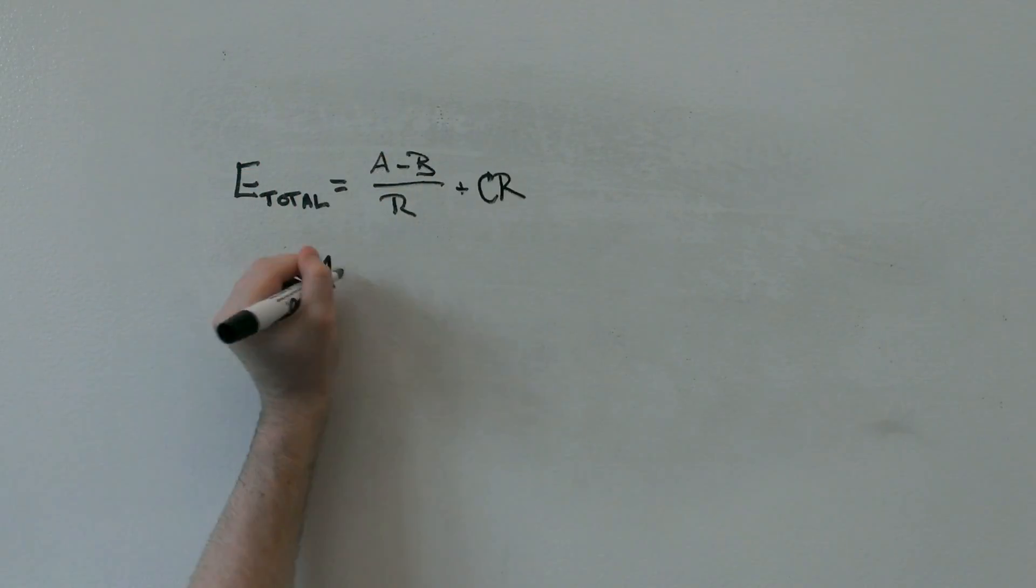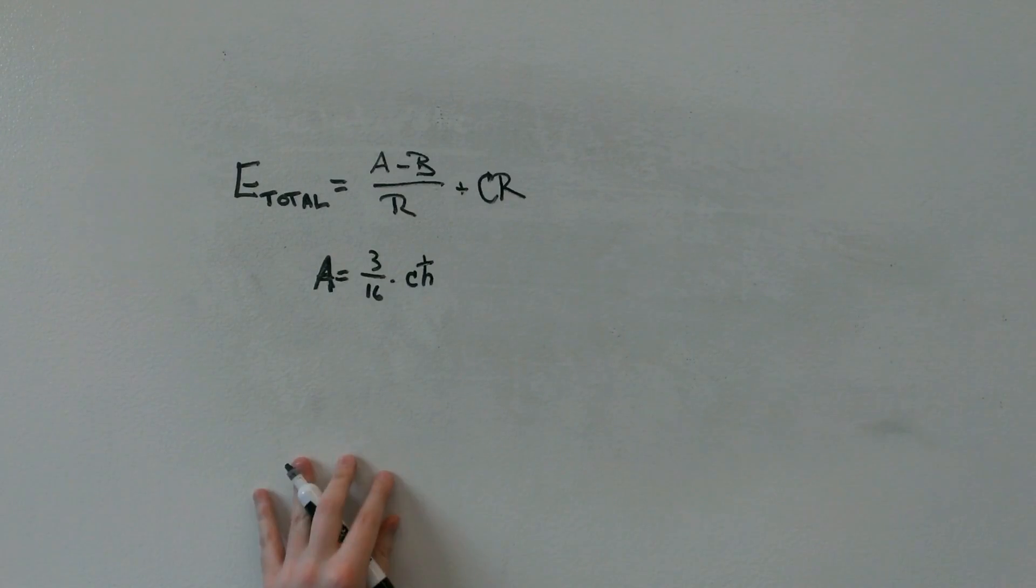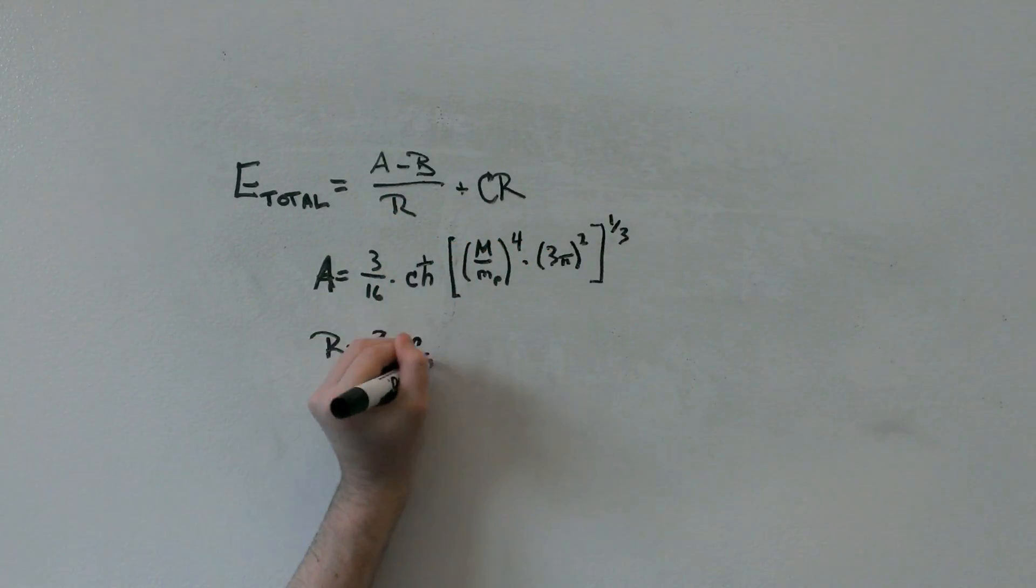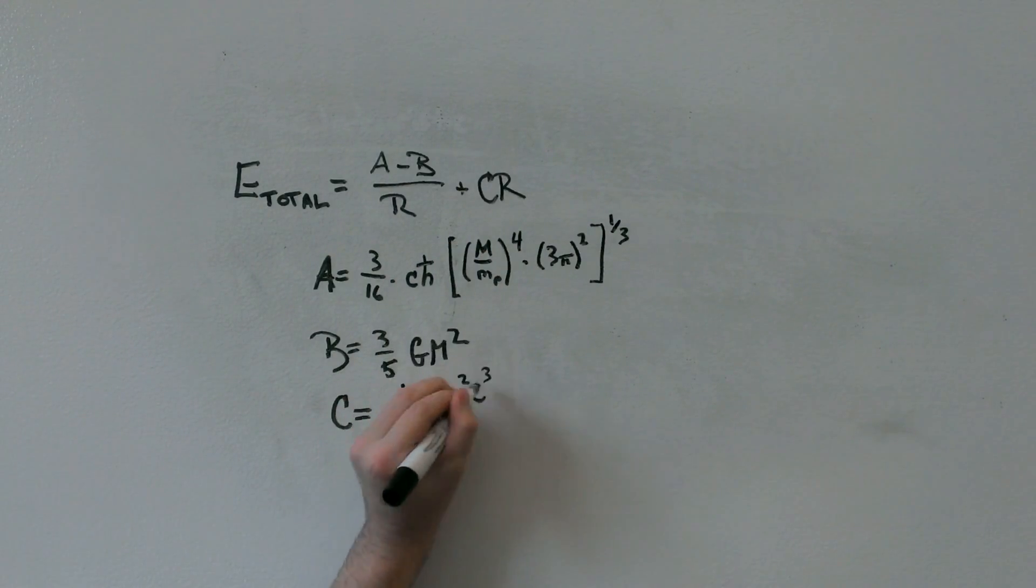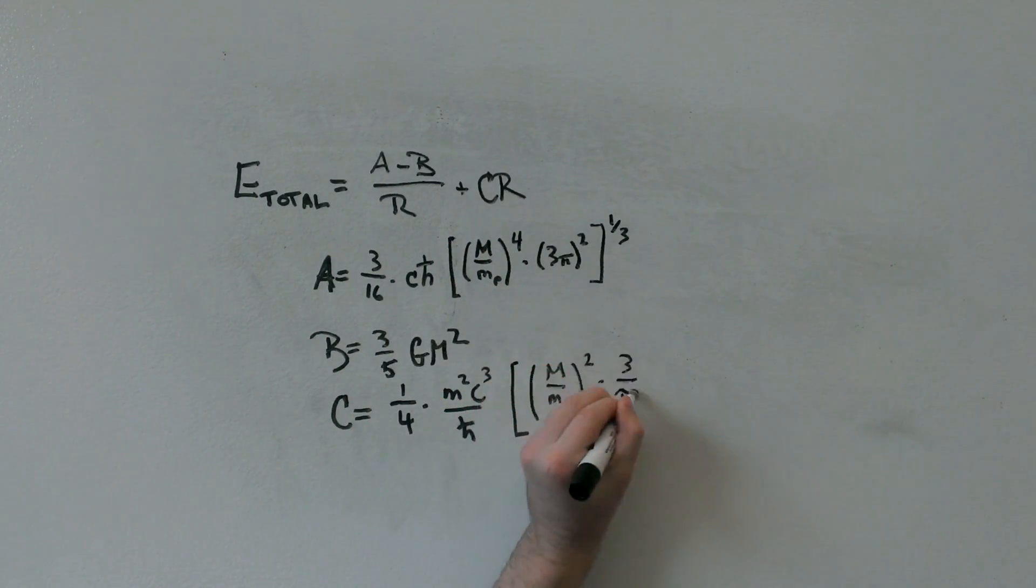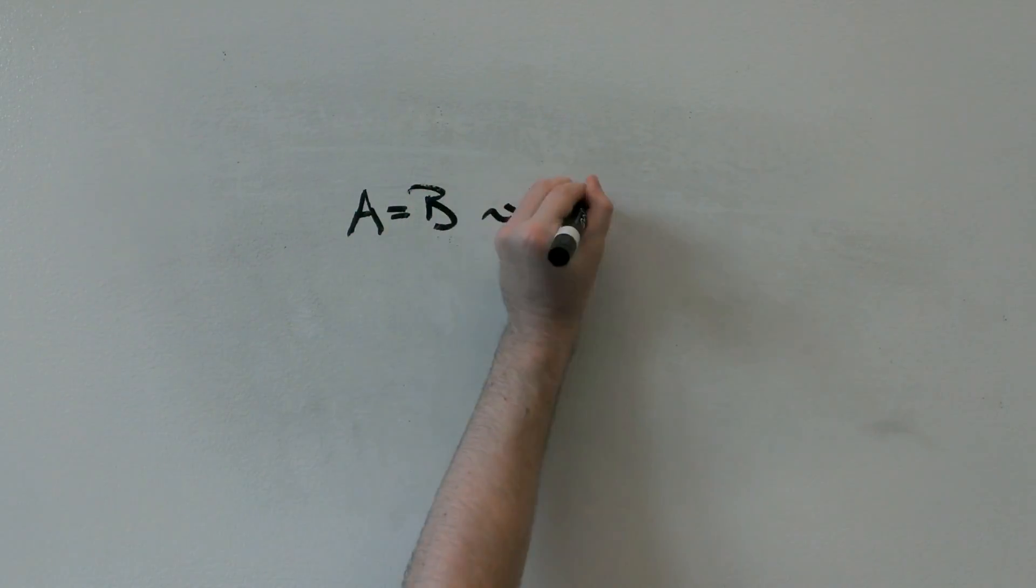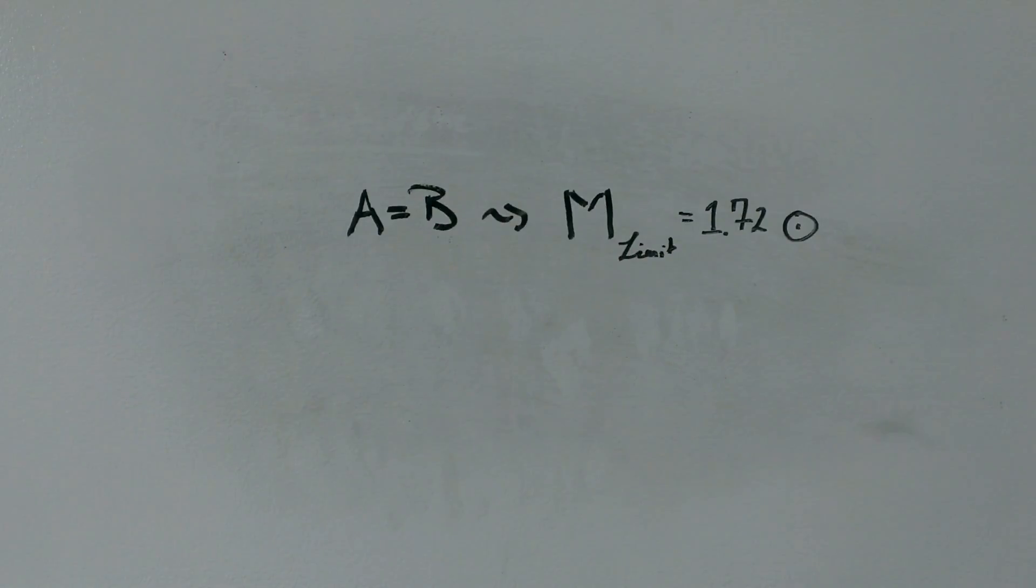With this result, we notice that if a is less than b, then the energy is unstable and there is no equilibrium. Hence, the requirement is that a must be greater than b, which leads us to the limiting case that a is equal to b. By solving this for the mass, we get that the mass limit is about 1.7 solar masses.